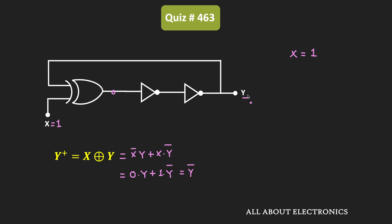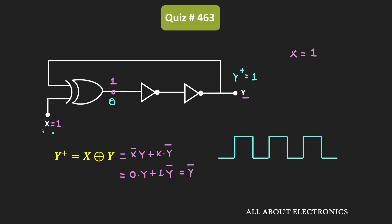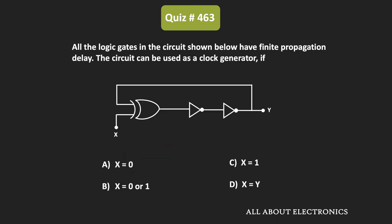Suppose if Y is 0, then the output will become 1, and it will reach this point after some finite propagation delay. So Y+ will become 1. And since Y+ is equal to 1, in the next iteration the output of the XOR gate will become 0, again after some finite propagation delay. In this way, the output of the circuit will change continuously between 0 and 1. That means whenever the input X is equal to 1, this circuit will work as a clock generator. So for the given question, this is the correct answer.